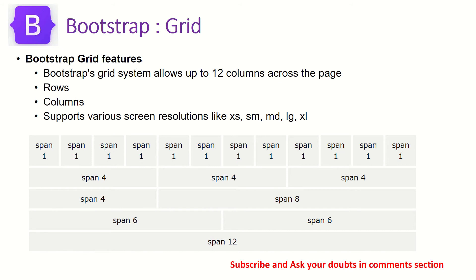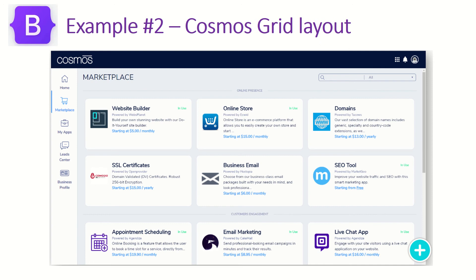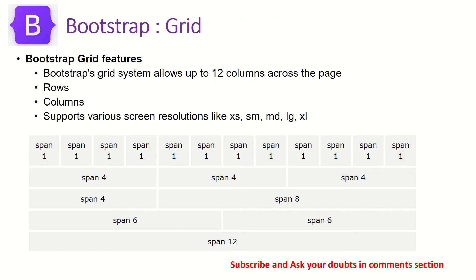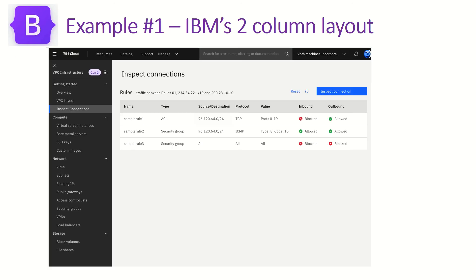Bootstrap provides a lot of utility classes and each row can have up to 12 columns. In a particular row we can have a maximum of 12 columns occupying that width. Bootstrap also provides utility classes like col, sm, xs, lg for large, xl for extra large, and xxl for extra extra large. Today we'll use all of this knowledge and put it into a sample project.